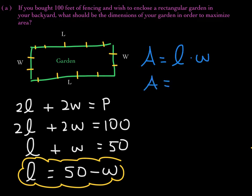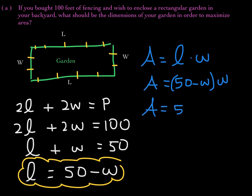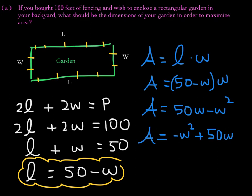We just figured out that the length can be written as 50 minus w, so we make that substitution. Distributing w gives us that the area is 50w minus w squared, or negative w squared plus 50w. We can write this as an area function: A of w equals negative w squared plus 50w.